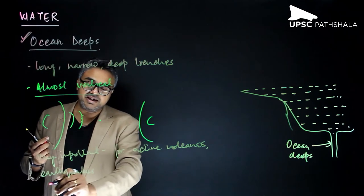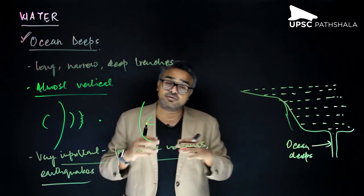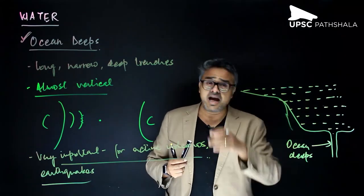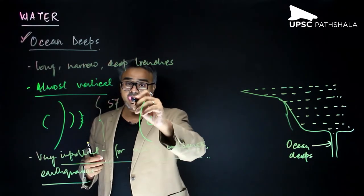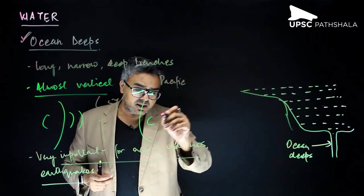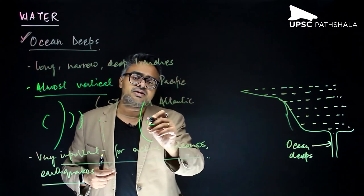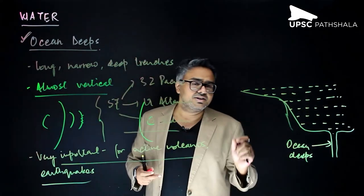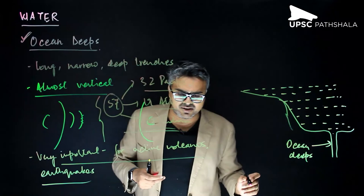These trenches are very important centers of activity for active volcanoes and earthquakes because they go very deep into the Earth. Currently, there are 57 important trenches that have been discovered. Out of these 57, 32 are in the Pacific Ocean, 19 in the Atlantic Ocean, and 6 in the Indian Ocean. This data may be updated over time as new trenches are discovered.